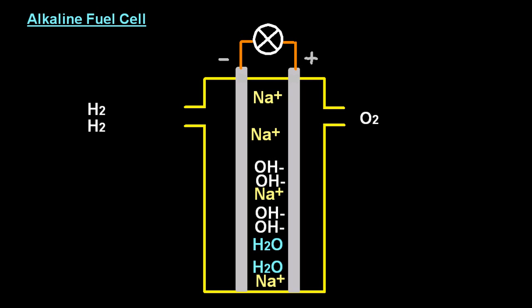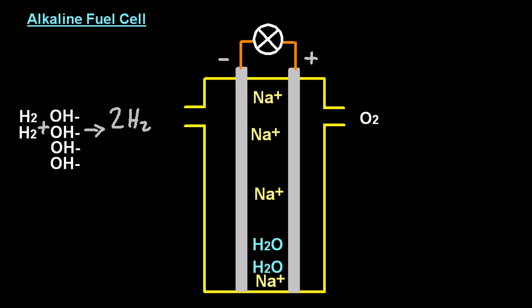So hydrogen goes in. And again, the negative electrode is where the electrons are produced. Hydrogen goes in and reacts with the hydroxide ions from your sodium hydroxide. That's going to produce a couple of water molecules and four electrons. And once again, those electrons go around the external circuit, in this case, lighting up a light bulb, which is a circle with a cross in it, in physics.